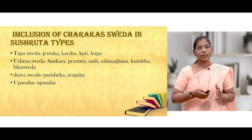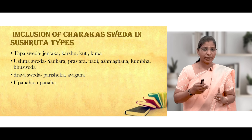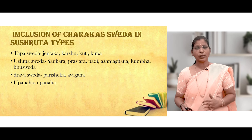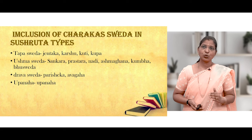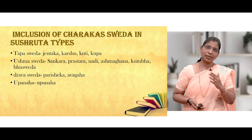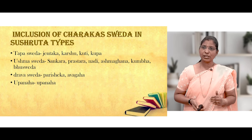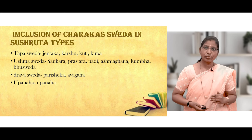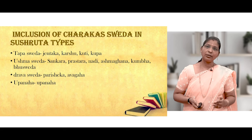For clinical application, Charaka's 13 Sveda can be distributed into Sushruta's 4 types. Under Tapasweda: Jentakasweda, Karshusweda, Kutisweda, and Kuppasweda. Under Ushmasweda: Sankarasweda, Prastharasweda, Nadi Sveda, Ashmaghanasweda, Kumbasweda, and Bhusweda. Under Dravasweda: Parishekasweda and Avgaha.